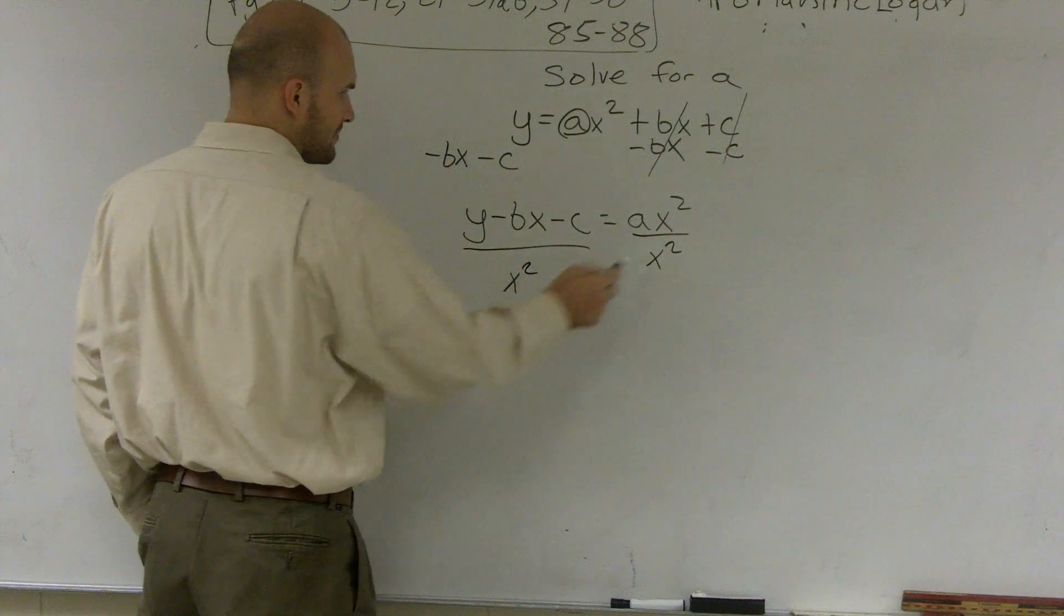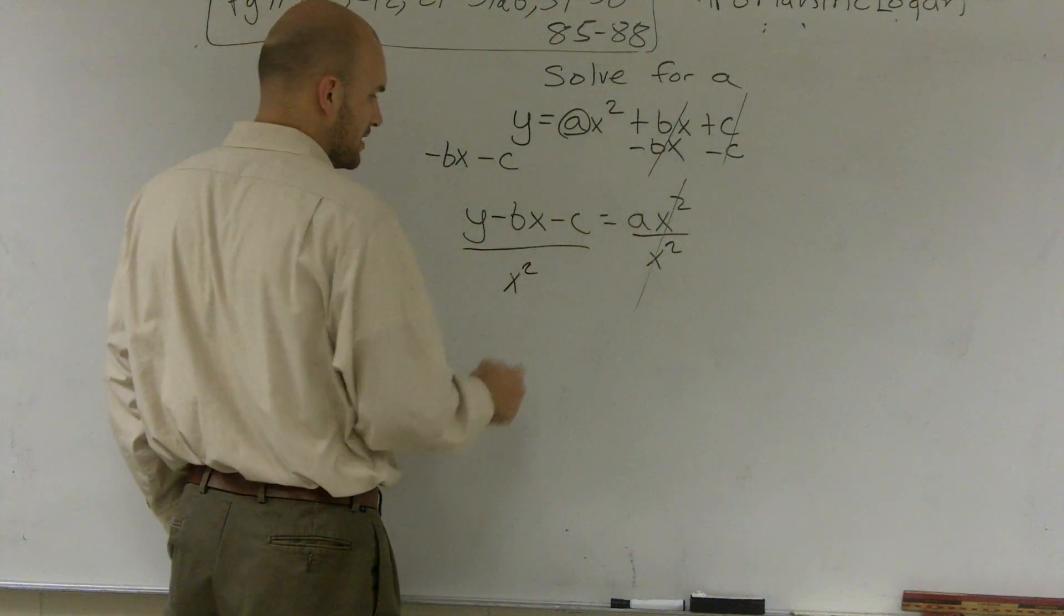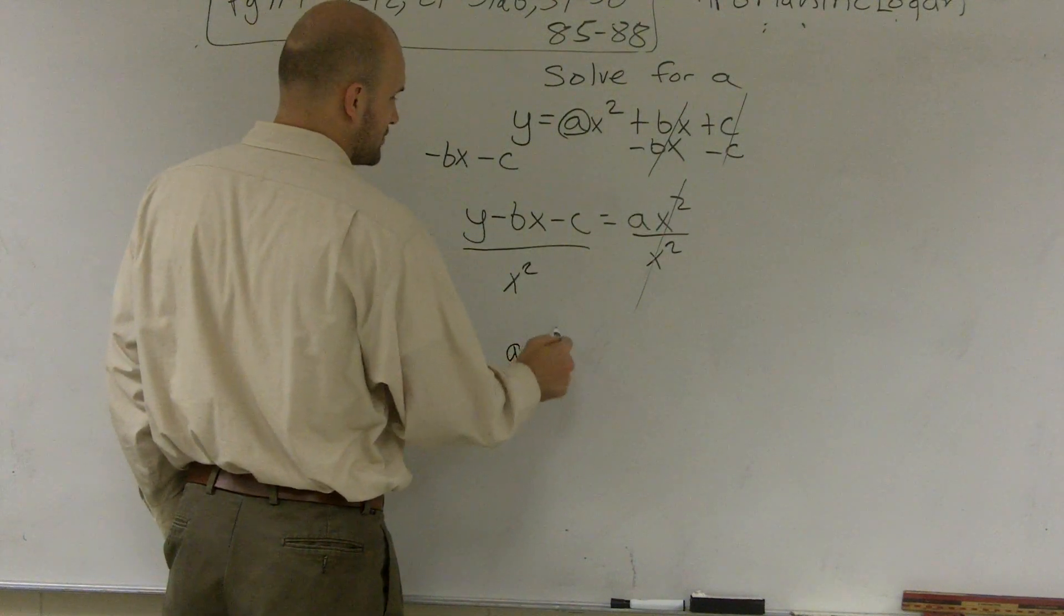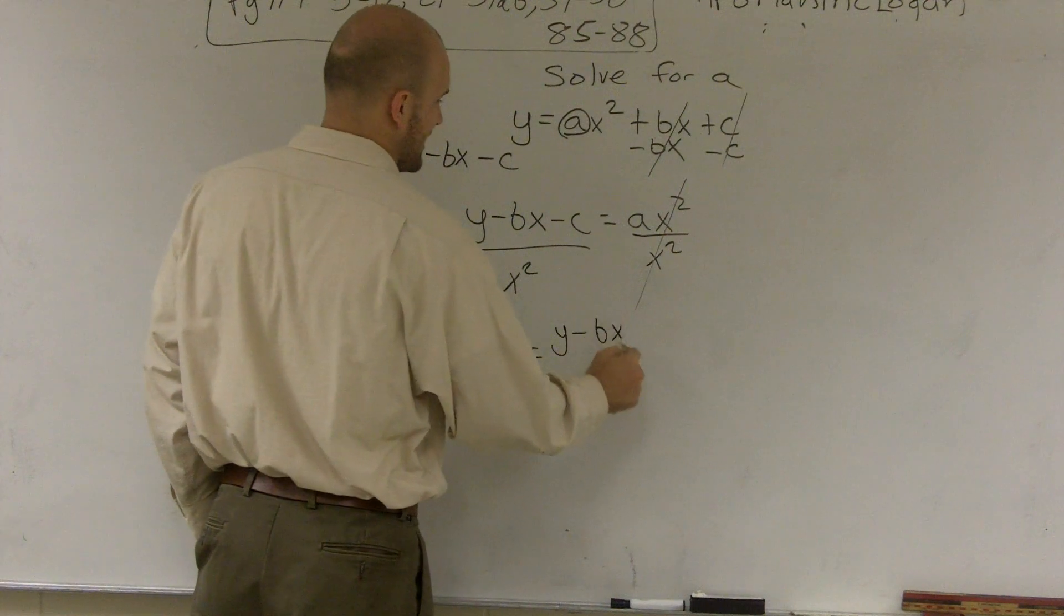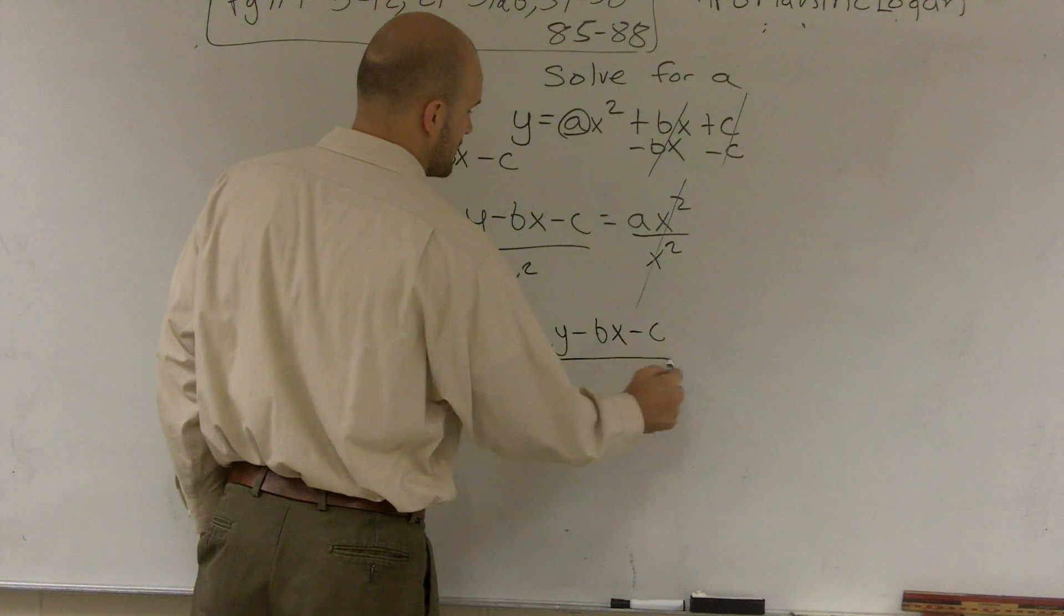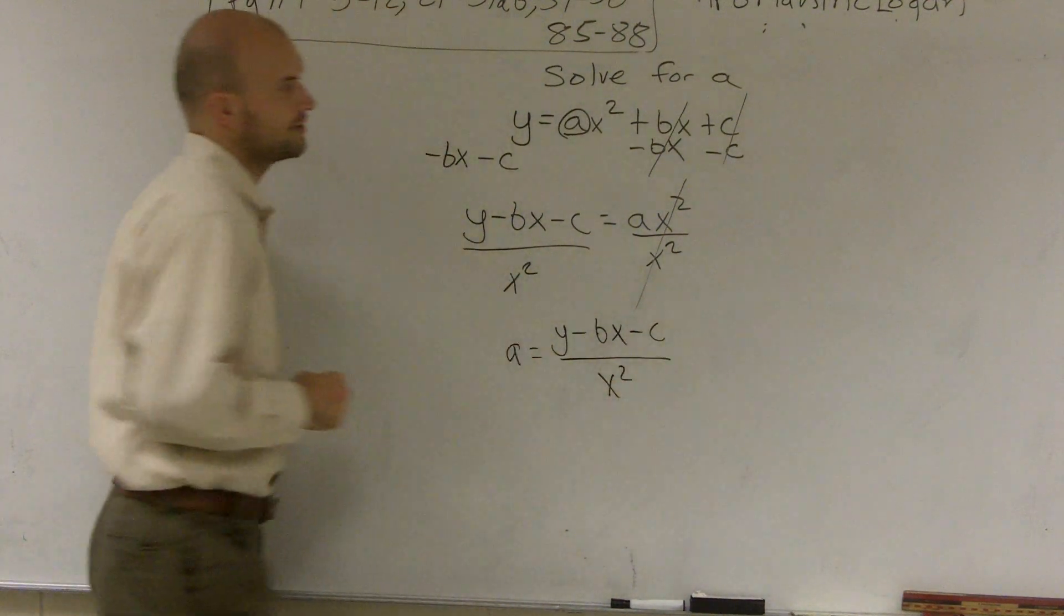And when I do that on both sides, that now cancels out to give me 1. I'm left with a equals y minus bx minus c all over x squared.